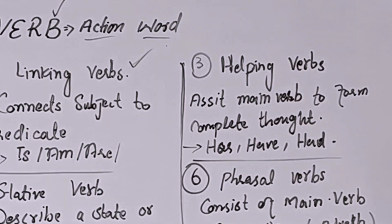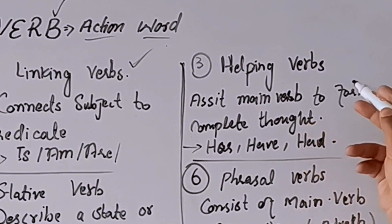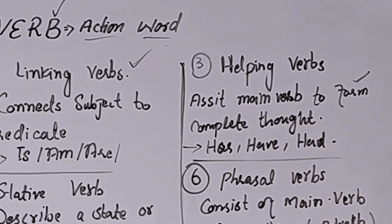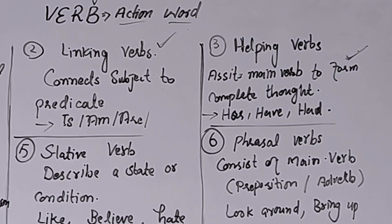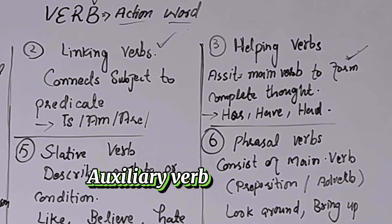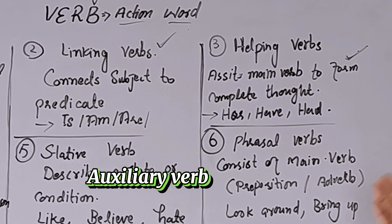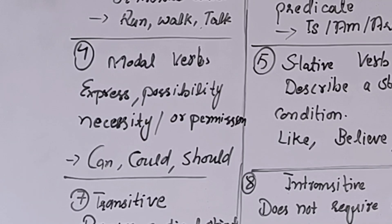Helping verb assists the main verb to form a complete thought in a sentence — یہ main verb کو assist کرتا ہے کہ وہ sentence میں مکمل مطلب لائے۔ Helping verb کو auxiliary verb بھی کہا جاتا ہے۔ Is, am, are, was, were, had, has, have — these are some of the common examples of auxiliary verbs or helping verbs.